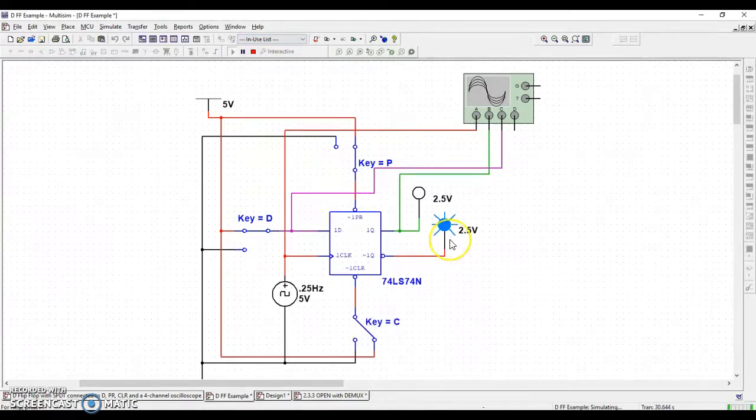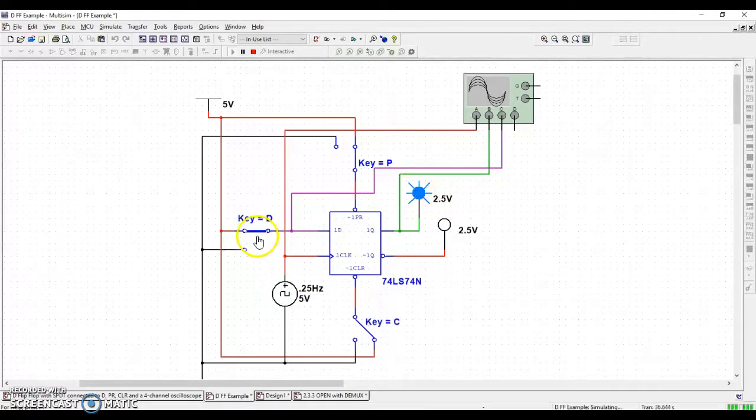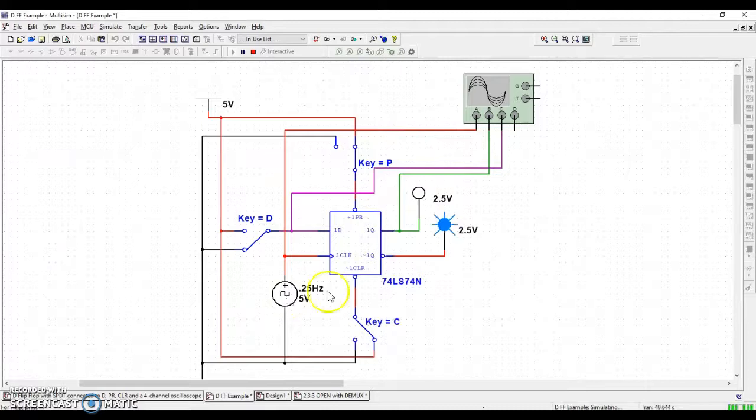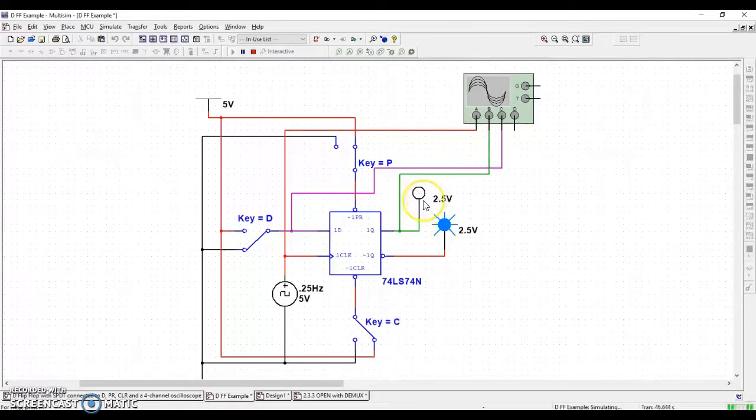In other words, what's happening is this. Whenever I flip D, there, the clock finally hit here, and so it switched. I switch it down, wait for the clock to hit, there it goes. Q turned off, Q not turned on, right? So D passed the zero through to Q.